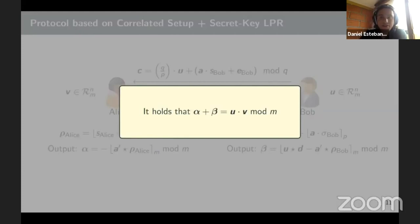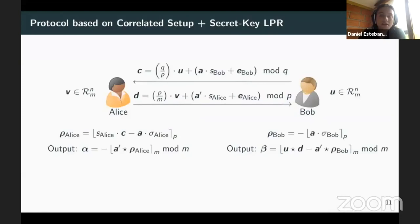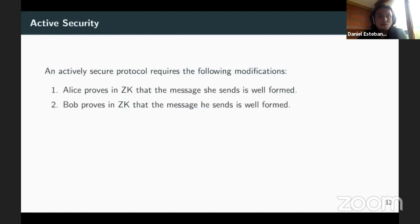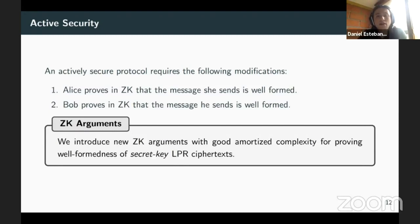This secret key protocol has half the communication complexity of the public key variant, since each party sends only one ring element instead of two. It is also one round, as the two messages are independent and can be sent simultaneously. For active security, the same attack vector arises, but in this case existing zero-knowledge techniques do not directly apply because the statements are different. Therefore, we introduce new zero-knowledge arguments with good amortized complexity for proving the well-formedness of secret key LPR ciphertexts.